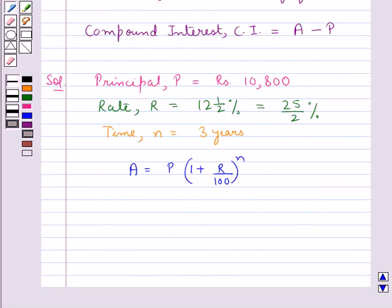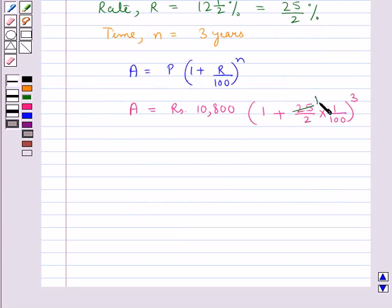Now let's substitute the values for P, R and N in this formula. So we have A equals Rs. 10,800 multiplied by 1 plus 25 upon 2 multiplied by 1 upon 100 this whole to the power 3. So this becomes equal to Rs. 10,800 multiplied by 1 plus 1 upon 8 whole to the power 3.